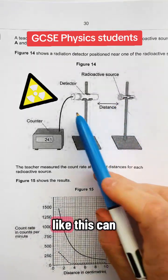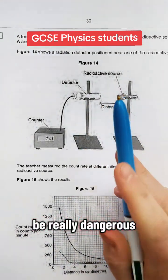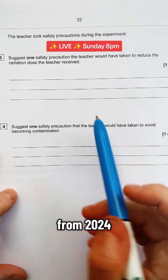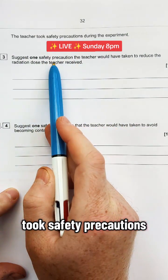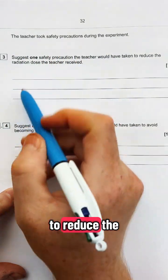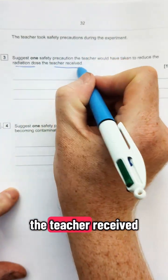Using radioactive sources in the classroom like this can be really dangerous, but what can you do to keep safe? In this question from 2024, that's exactly what students were asked. It says the teacher took safety precautions. What's one safety precaution the teacher would have taken to reduce the radiation dose that the teacher received?